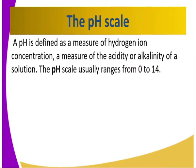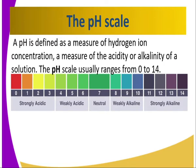We have talked of the pH scale. It is defined as the measure of hydrogen ion concentration — a measure of the acidity or alkalinity of a solution. The pH scale usually ranges from 0 to 14, as shown here. 7 is neutral, and therefore it stands as our point of reference when we want to determine whether a substance is acidic or basic using the pH scale together with universal indicator.